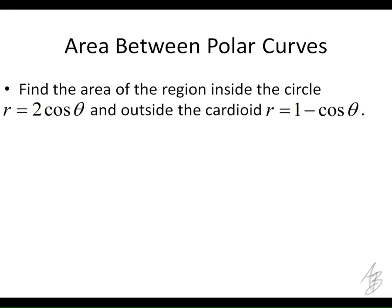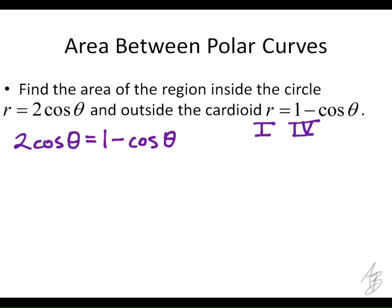We set them equal: 2 cosine of theta equals 1 minus cosine of theta. By looking at our graph, we see intersections in the first quadrant and the fourth quadrant. I would graph these two as rectangular functions on the calculator and find where they intersect — somewhere between 0 and pi over 2, and somewhere between negative pi over 2 and 0. I prefer negative pi over 2 to 0 because it's continuous with the region from 0 to pi over 2.